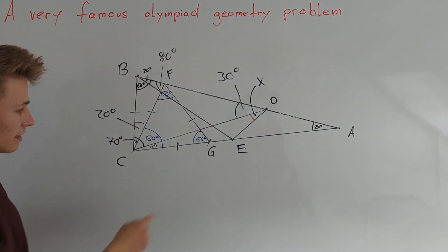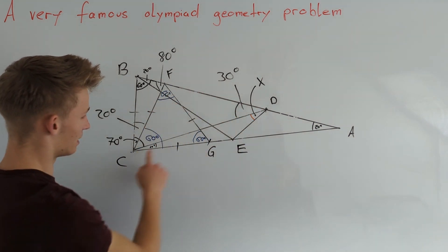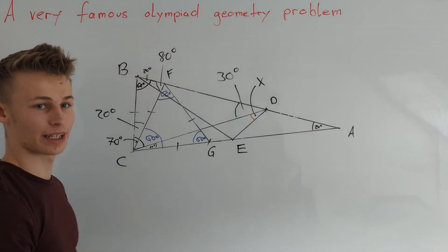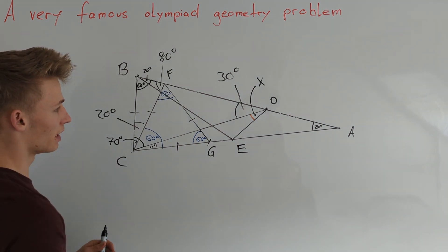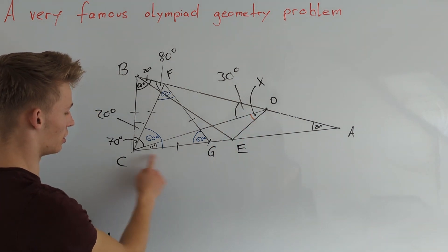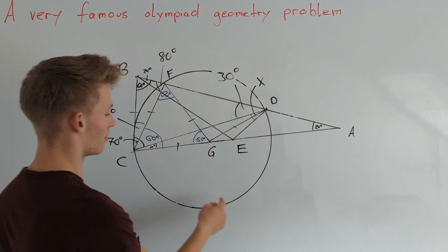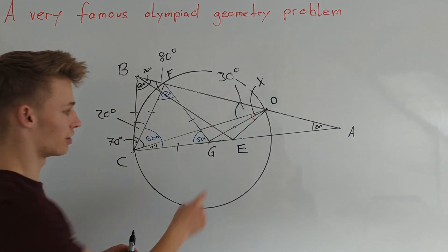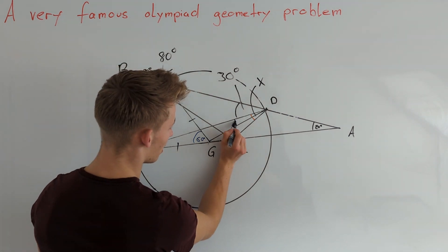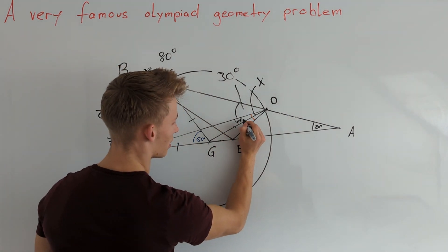Now we see that since GC is equal to GF and the angle FDC is 30 degrees, which is exactly half of 60 degrees, we know that by the inscribed angle theorem, point D must lie on the circle with center G and radius GC. From the fact that D lies on this circle, we know that GD must be equal to GC. Therefore this angle here must equal this angle here, so this angle is equal to 10 degrees.